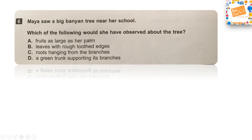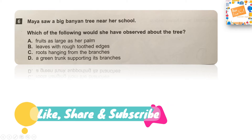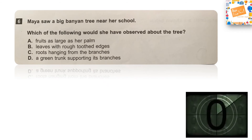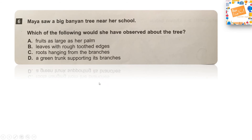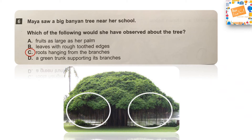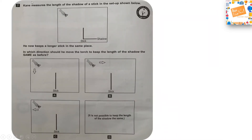Next question: Maya saw a big banyan tree near her school. Which of the following would she have observed? Option A: fruits as large as a palm, Option B: leaves with rough tooth edges, Option C: roots hanging from the branches, or Option D: a green trunk. What strikes most about a banyan tree are the roots hanging from its branches. So Option C is the right answer. An important fact: the banyan tree is the national tree of India.